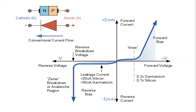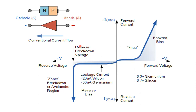In reverse biased condition, there is a reverse voltage present across the diode. When the reverse voltage increases to some particular level, the diode will turn on rapidly — that voltage is called reverse breakdown voltage or reverse break-over voltage. At reverse break-over voltage, the diode current suddenly increases. That region is called Zener breakdown or avalanche region. The current in reverse bias is called leakage current — less than 20 microamps for silicon and less than 50 microamps for germanium.